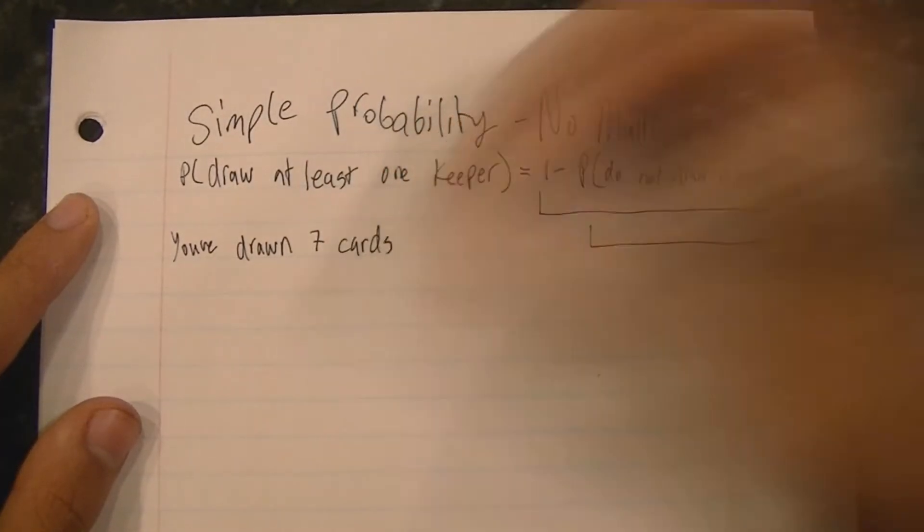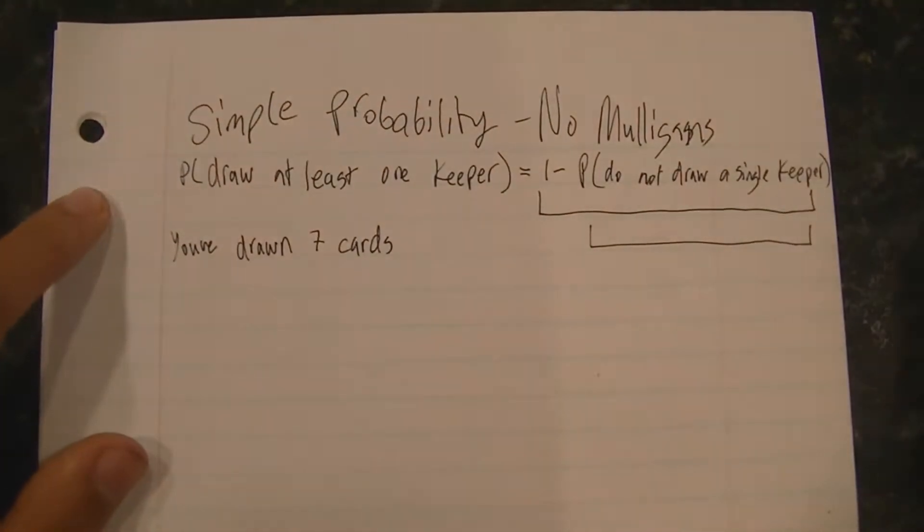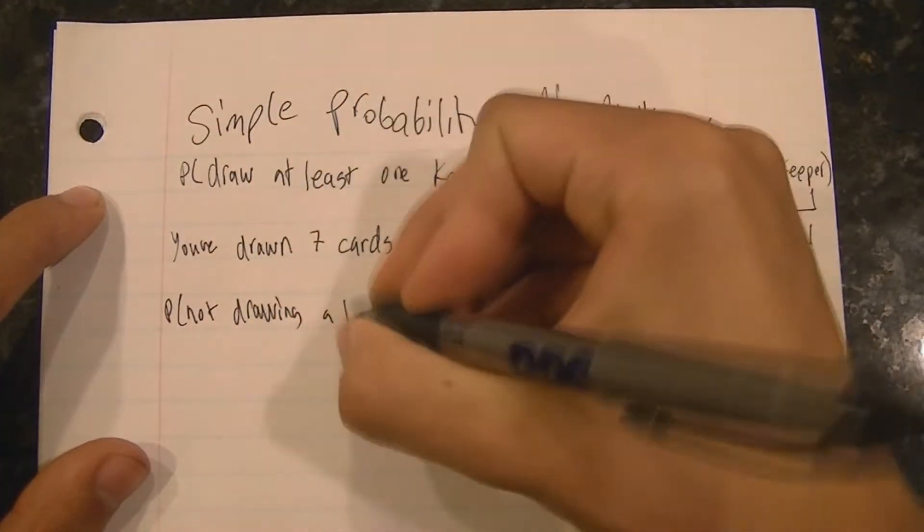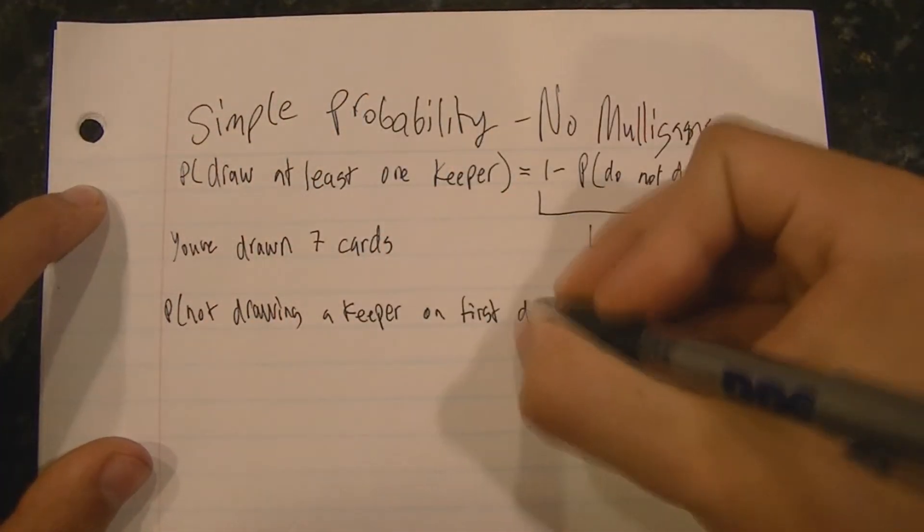And one of the most elementary ways of calculating the probability of not drawing a Keeper is looking at the probability that you'll draw a card from your deck that isn't a Keeper.